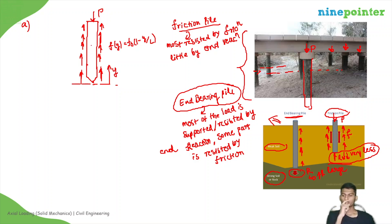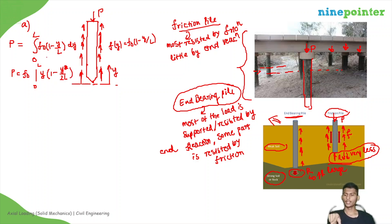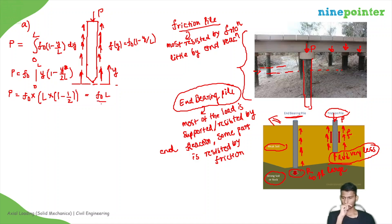So taking Y as the coordinate along the pile, since the system is in equilibrium, the load P equals the total friction force: P = integral from 0 to L of F0 (1 − Y/L) dY. Evaluating: P = F0 times [Y − Y²/2L] from 0 to L = F0 times (L − L/2) = F0·L/2. Therefore, F0 = 2P/L.